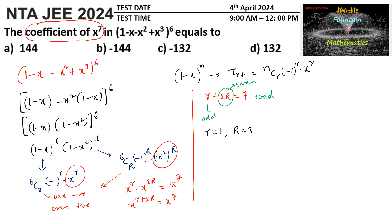When r equals 1 and capital R equals 3: the term from the first factor is minus 6C1 times x^1 (negative because r is odd), and from the second factor is minus 6C3 times x^(2×3), giving x^1 times x^6 equals x^7.